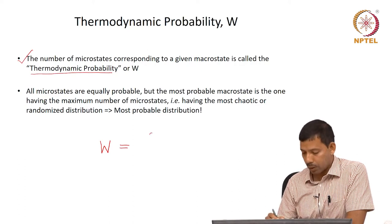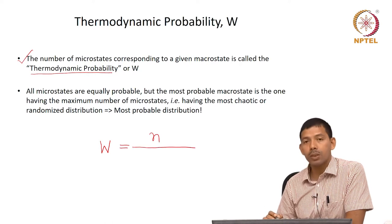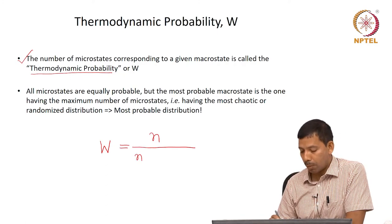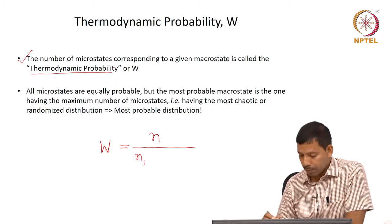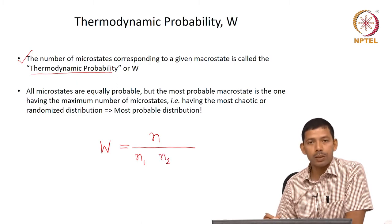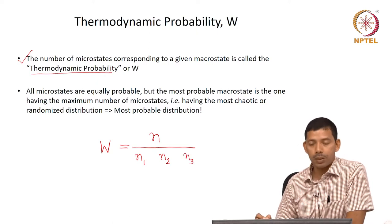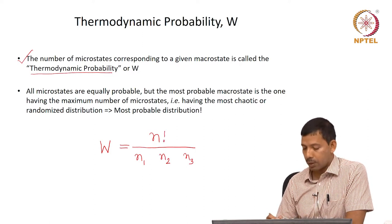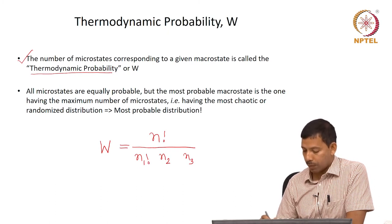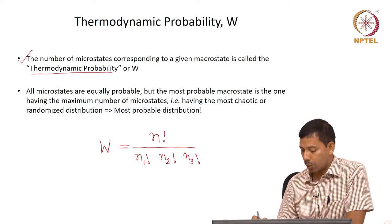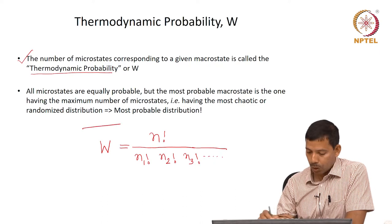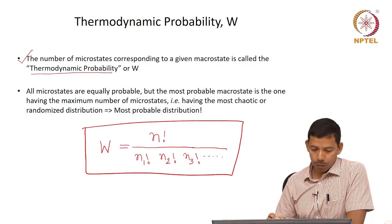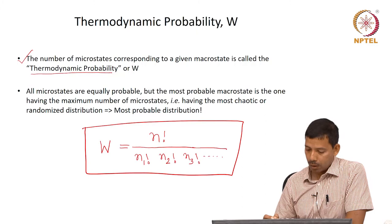The thermodynamic probability W can be written in general for a system of n particles. If you have a system of n particles, and the particles are distributed in different energy states as n1, n2, n3, where n1 is the number of particles in energy state 1, n2 is the number of particles in energy state 2, n3 is the number of particles in energy state 3, and so on, then W is defined as n factorial divided by n1 factorial times n2 factorial times n3 factorial and so on. This is the definition of thermodynamic probability, which defines the number of microstates for a given distribution.